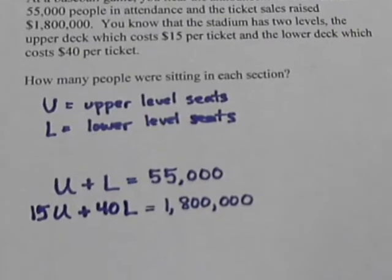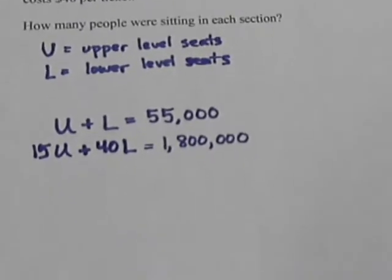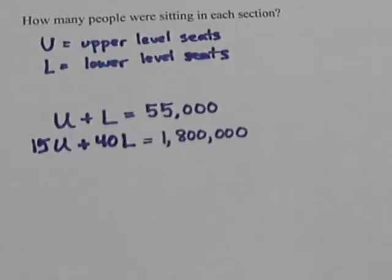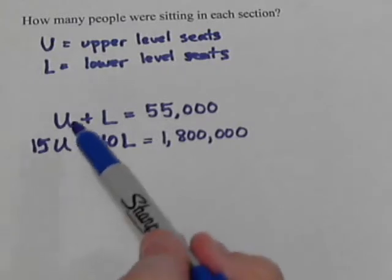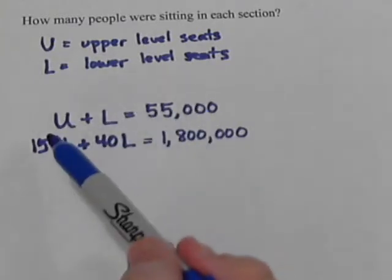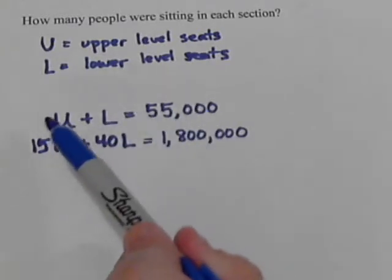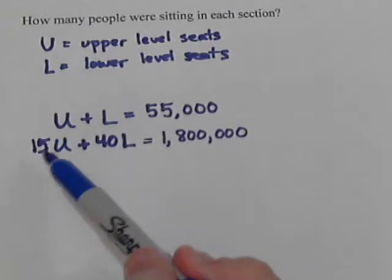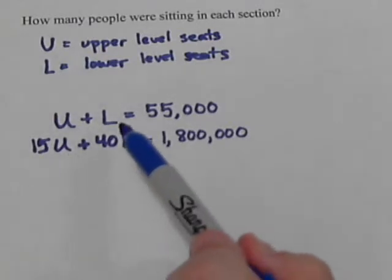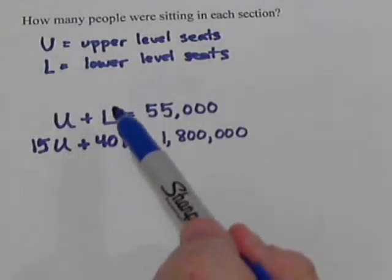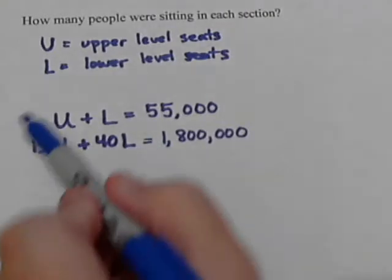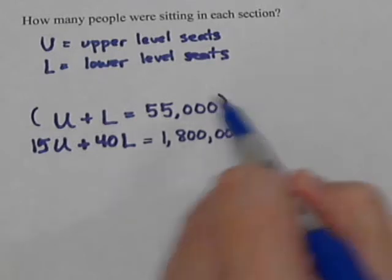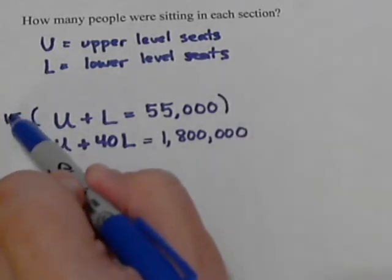Now it's time to solve this. We're going to have to cancel one of the variables out. It really doesn't matter which — we could multiply the top equation by negative 15 to cancel the U terms, or by negative 40 to cancel the L's first. Let's keep the numbers small, so let's multiply the top equation by negative 15.